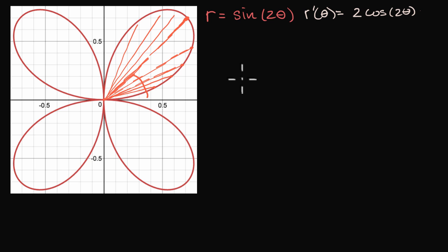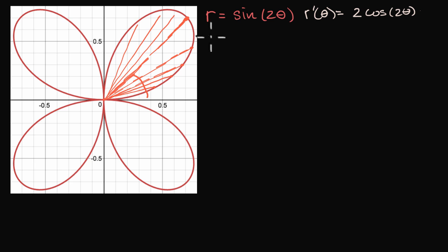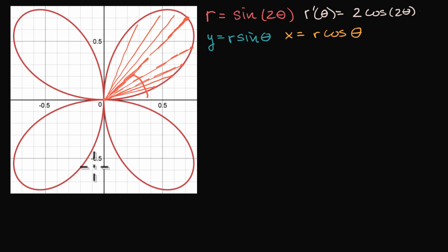Now let's see if we can express this curve in terms of x's and y's and think about those derivatives. A review from pre-calculus: when you want to go between the polar world and the rectangular world, you have to remember the transformation that y equals r sine of theta and x equals r cosine of theta. Let's take one of these angle-r combinations and see why that makes sense — this is theta and that is our r.